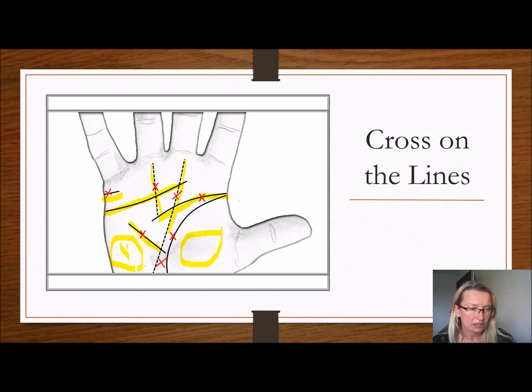There is this cross down here, which is in between the fate line and the life line. And that cross represents somebody who can save lives. So it's called the St. Andrew's Cross. And it can be quite large. It can be quite small.